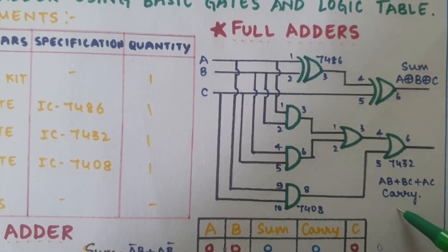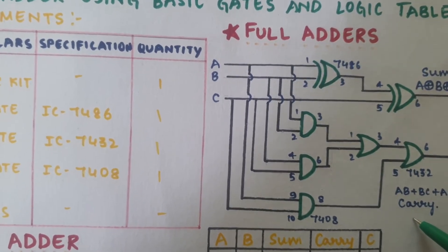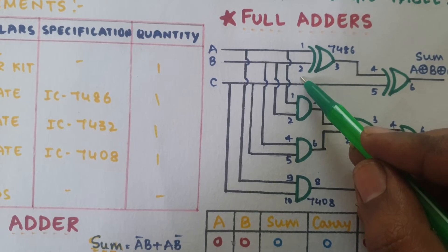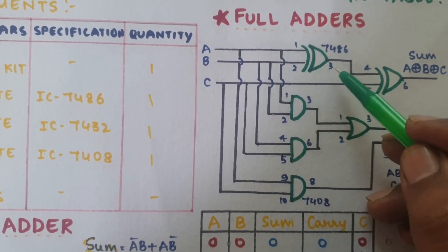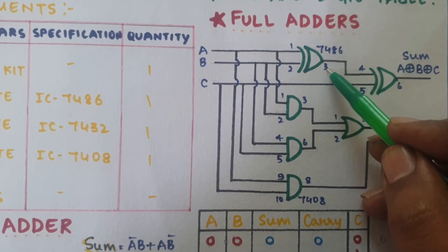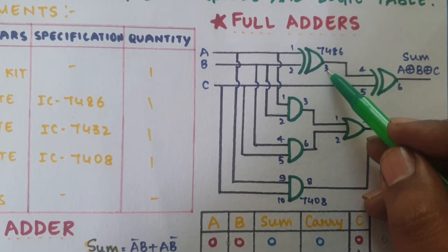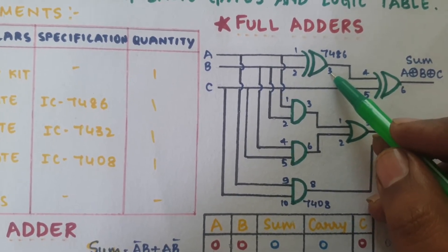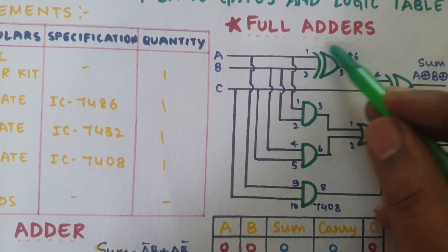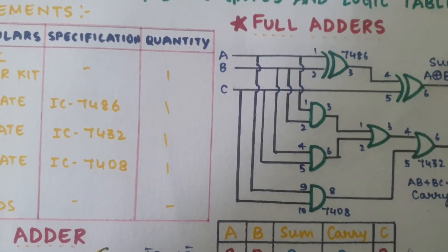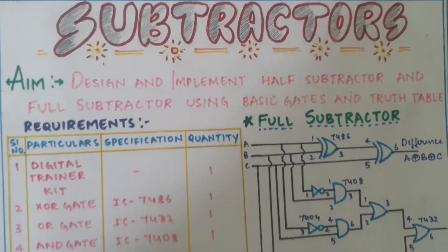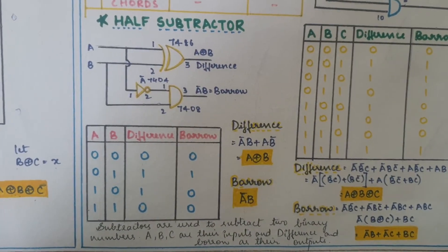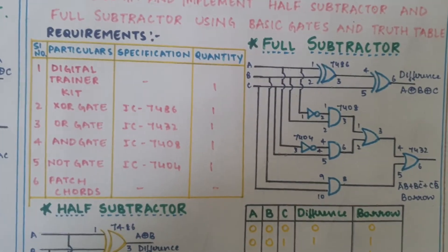For pin numbering, refer to the previous video on basic logic gates where I explained how to number your logic circuit. Now coming to the subtractor circuit — we need to generate two things: a half subtractor and a full subtractor.